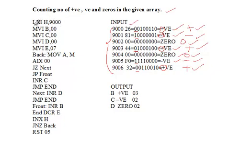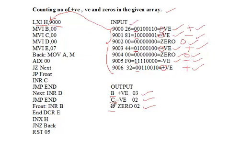To do this, we write assembly language for 8085. First, I use LXI H, 9000 to load inputs from address 9000 onwards into the HL pair. The results will be shown in B, C, and D registers for positive, negative, and zero counts respectively. B should show 03, C should show 02, and D should show 02. Initially, we set all three to zero using MVI B,00 — MVI C,00 — MVI D,00.